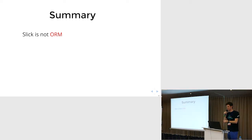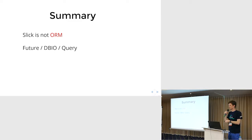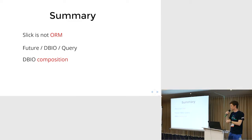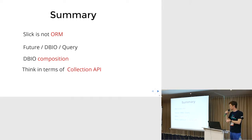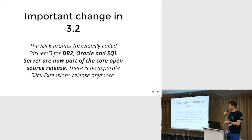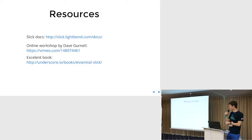Summary for the first part: Slick is not an ORM and we should not try to do things like we do in the ORM world. Future, DBIO, and Query are the most important parts of the Slick library. We should remember about DBIO composition — we can compose different DBIOs in different ways. We should think in terms of the collection API. An important change in Slick 3.2 is that some drivers that were only supported commercially are now also open source.